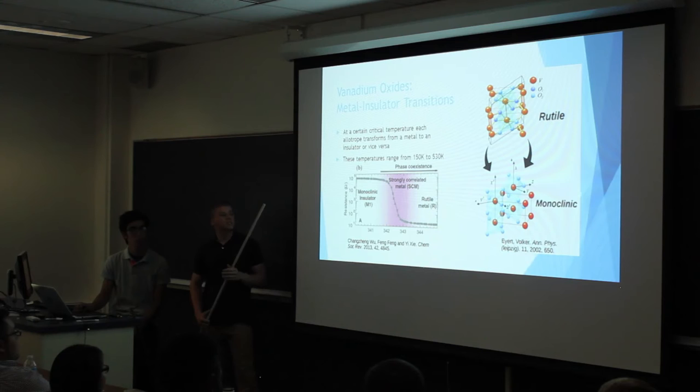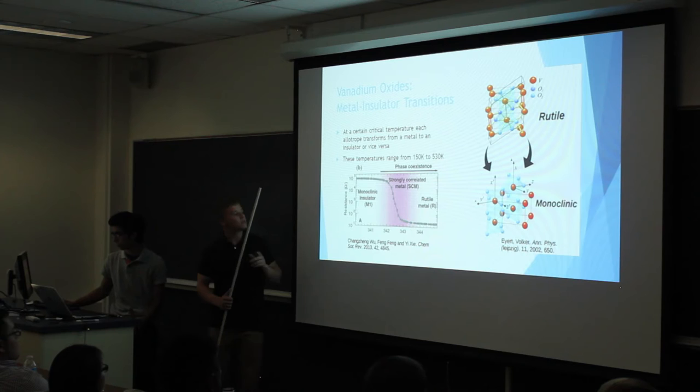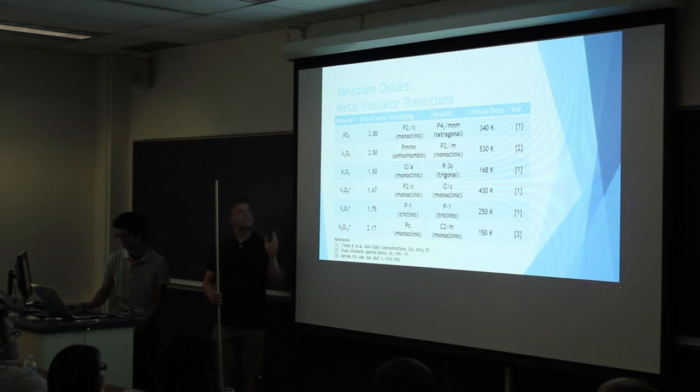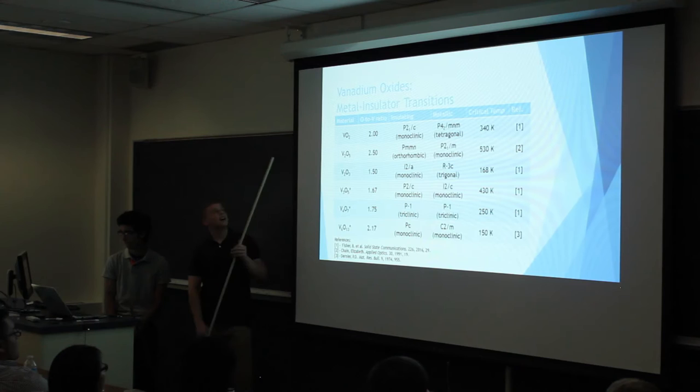To get an idea of the magnitude of the change in these properties, I have this graph here where in the monoclinic phase it has a resistance of 10 to the 5 ohms, whereas after the transition takes place it's much lower, somewhere more on the scale of 10 ohms. So you can see it's a pretty drastic difference. The x-axis here is the temperature.